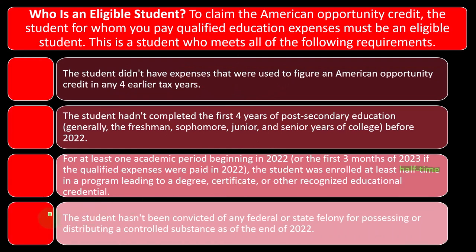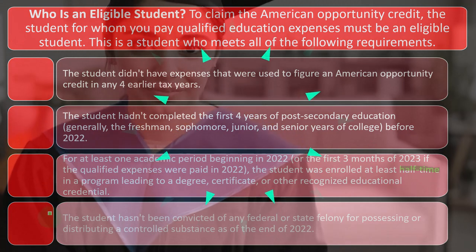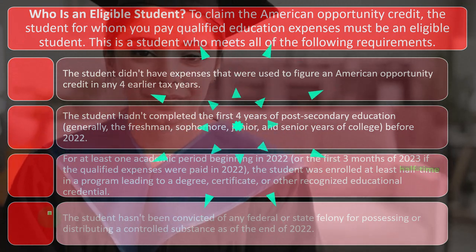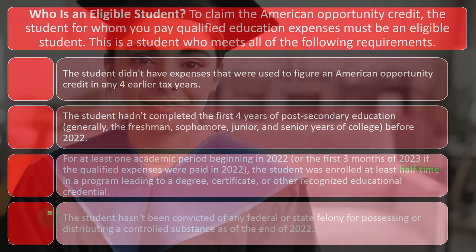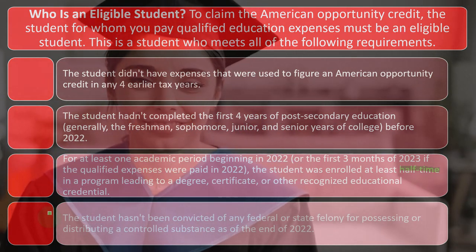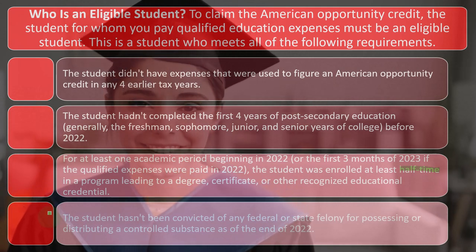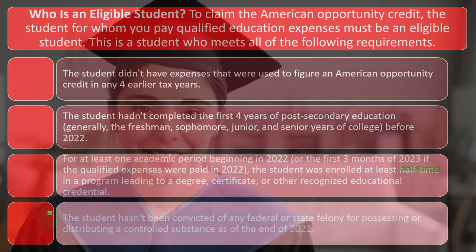Fourth condition: the student hadn't been convicted of any federal or state felony for purposes of distributing a controlled substance as of the end of 2022. It's a bit of a random one, but it's there.